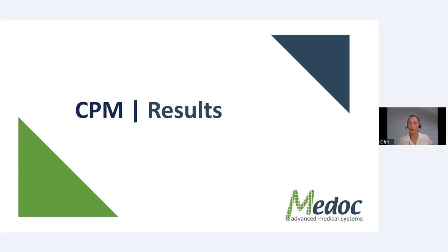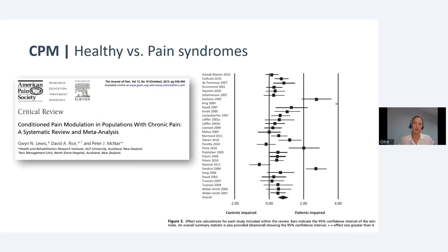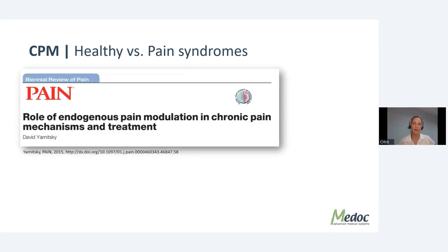We talked about variability and good versus bad CPM. Why is having ineffective CPM a problem? Lewis and colleagues did an interesting review and meta-analysis of studies where CPM was conducted on both healthy and chronic pain patients. In general, they found that patients tend to have impaired CPM while controls tend to have effective CPM — something very much worth reading as it is still widely cited.